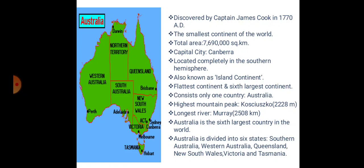Australia is also known as the sprawling pancake. Australia has its highest mountain peak known as Kosciuszko, which is 2,228 meters high. It has the longest river named Murray, which travels 2,508 kilometers.